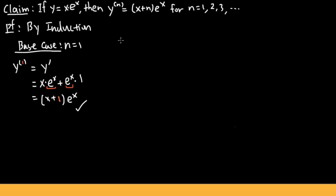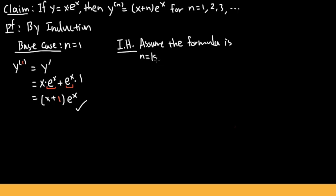So the formula is true for the base case — that checks out. Now we write down the inductive hypothesis (IH): we assume the formula is true for n equal to some positive whole number k. That means the kth derivative, y superscript (k), is equal to (x plus k) times e to the x, substituting k for n. We will use this to show the (k+1)th derivative has the same form with k+1.